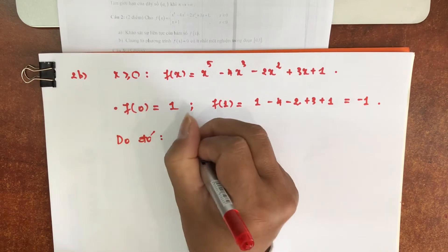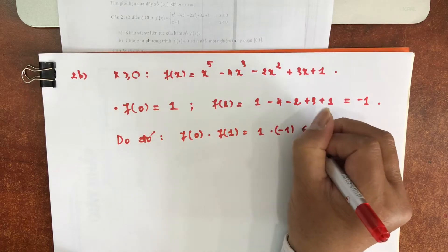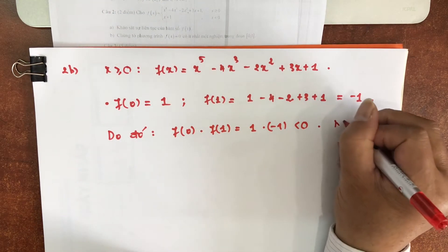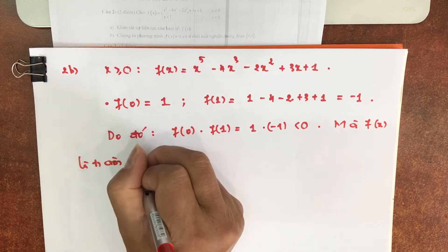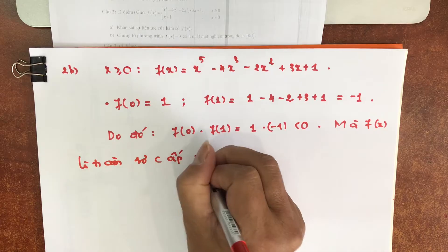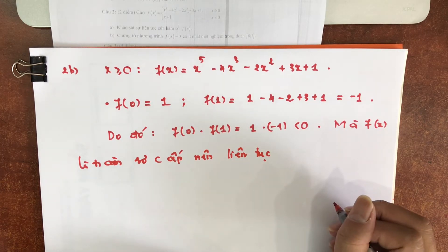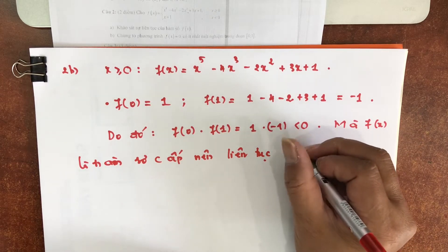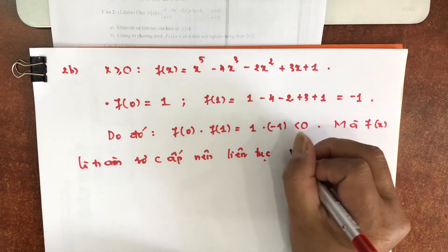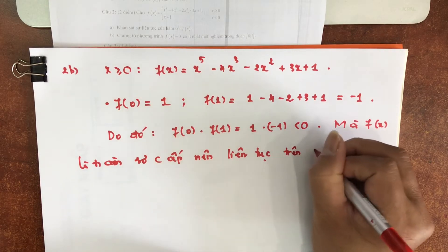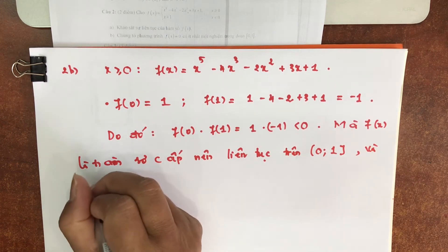Do đó F(0) nhân với F(1): các anh chị thấy là 1 nhân với trừ 1 nhỏ hơn 0. Mà F(x) là hàm sơ cấp nên liên tục. Trên nửa khoảng [0,1). Và F cũng liên tục tại 0 luôn.